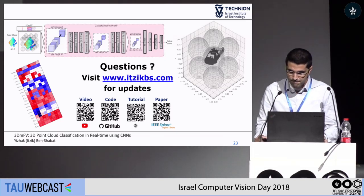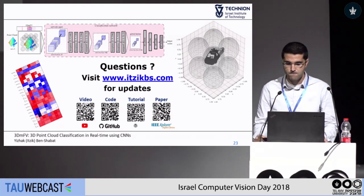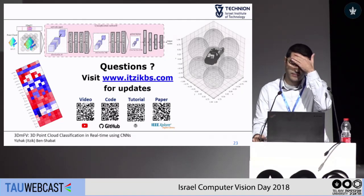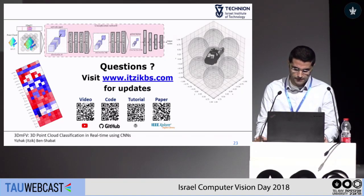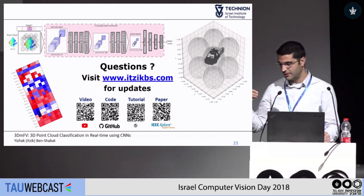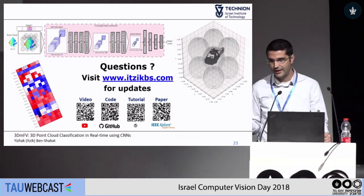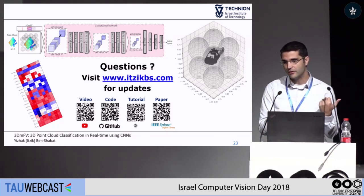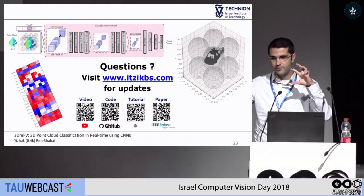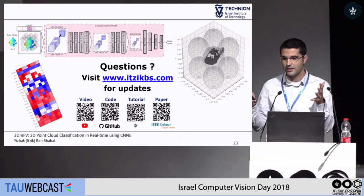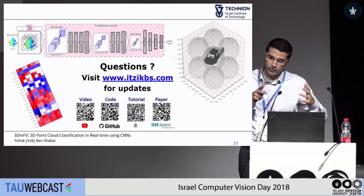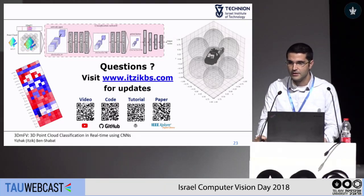Question: Can the Gaussians be made part of the learning process, learning the covariance of each Gaussian during training? Response: We tackled this issue. The problem is that the standard deviation appears in denominators, so the gradients explode very fast. We did try pre-learning the positions of the Gaussians, but if you learn the positions, you can't use the CNN anymore because the Gaussians are no longer on a grid — you could use a fully connected layer, but you lose the shift-invariance power of convolutions.